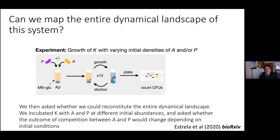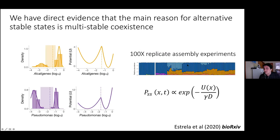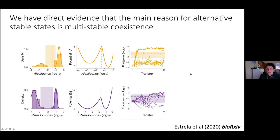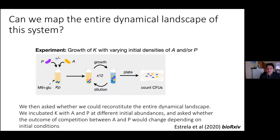Now we can take apart communities assembled from the top down and isolate their dominant members. We isolated Pseudomonas, two strains of Enterobacteria, and Alcaligenes. We could not yet isolate the Comamonadaceae Delftia, indicating it clearly requires Alcaligenes to grow. Notably, Alcaligenes also doesn't grow on its own in this environment — it needs the fermenter present. So we took KP, the dominant fermentative Klebsiella, and mixed it with Pseudomonas and Alcaligenes at different abundances to reconstitute our communities from the bottom up.